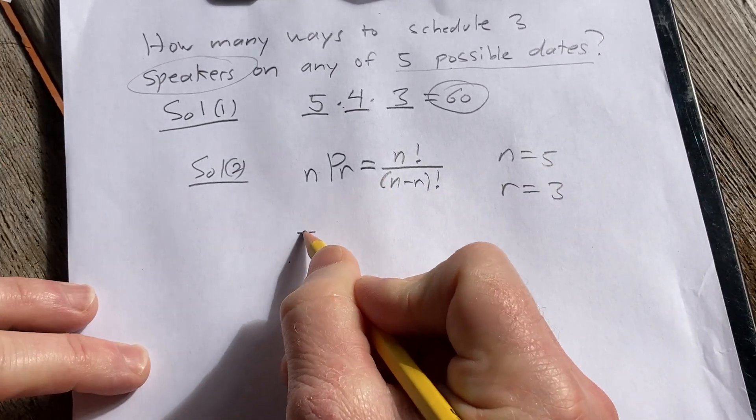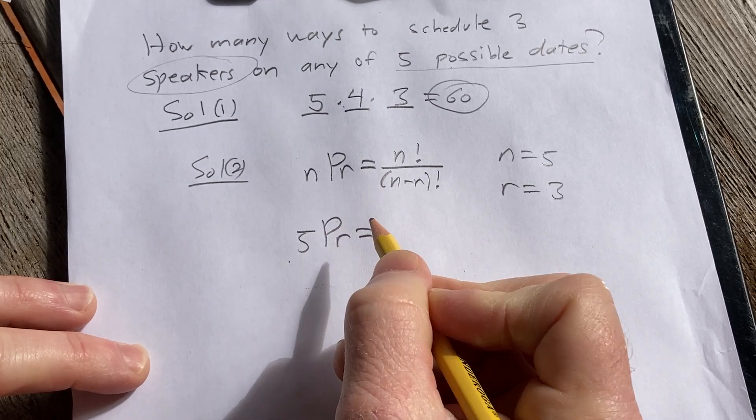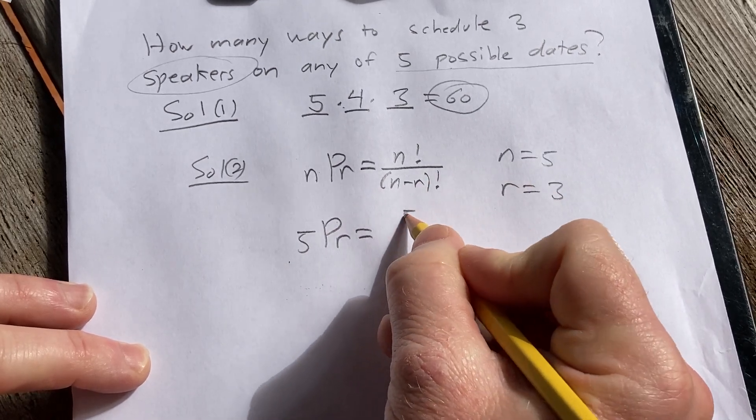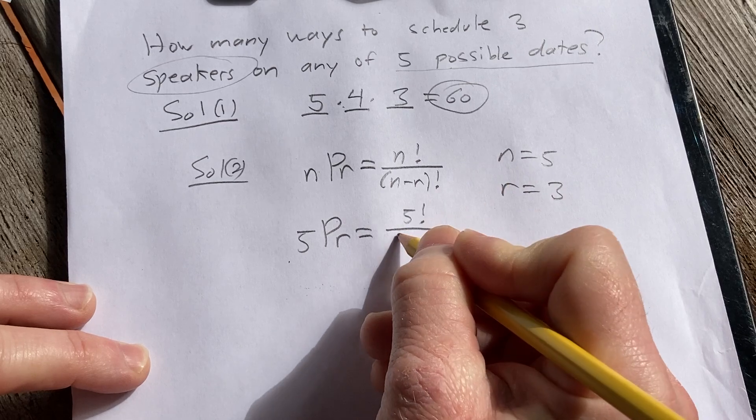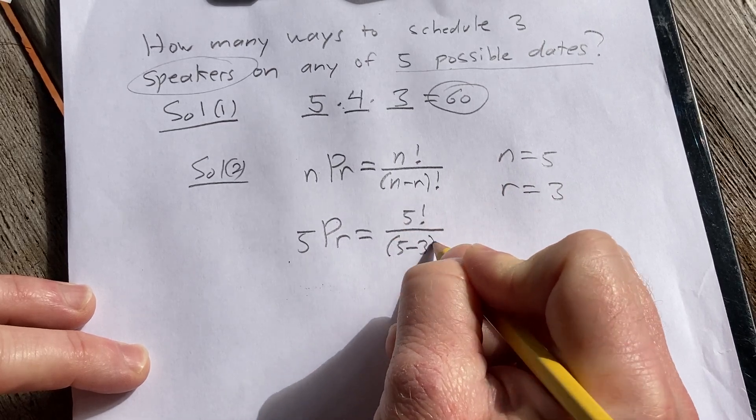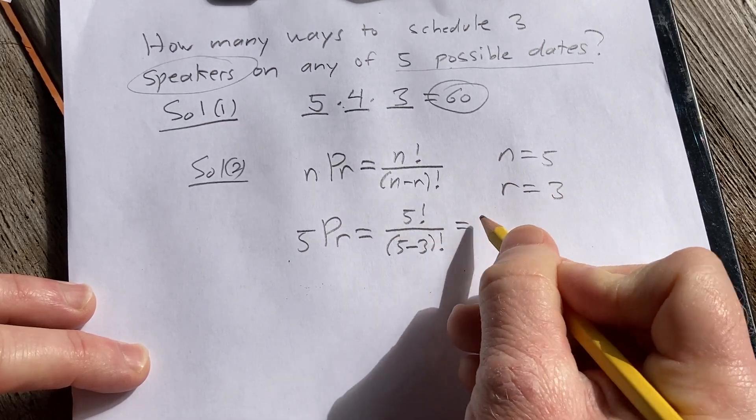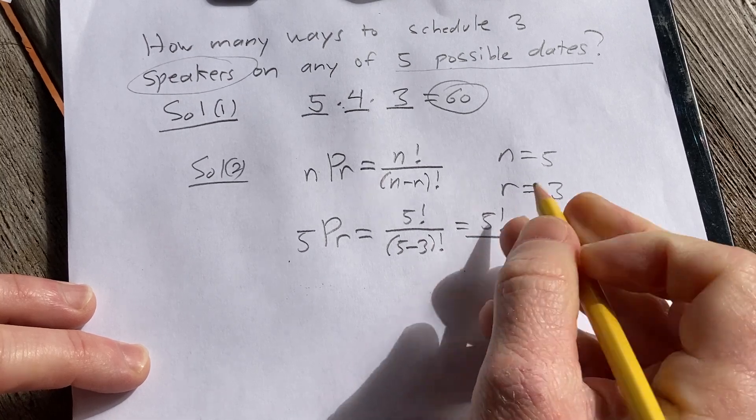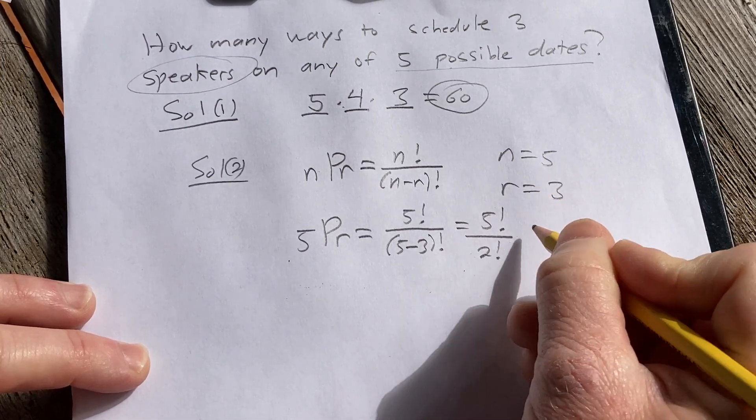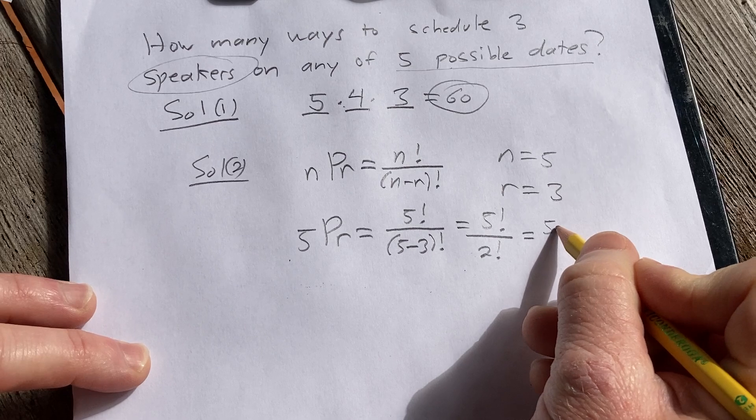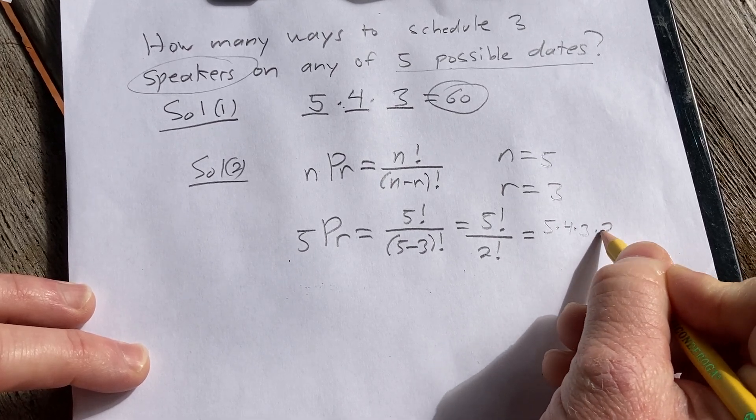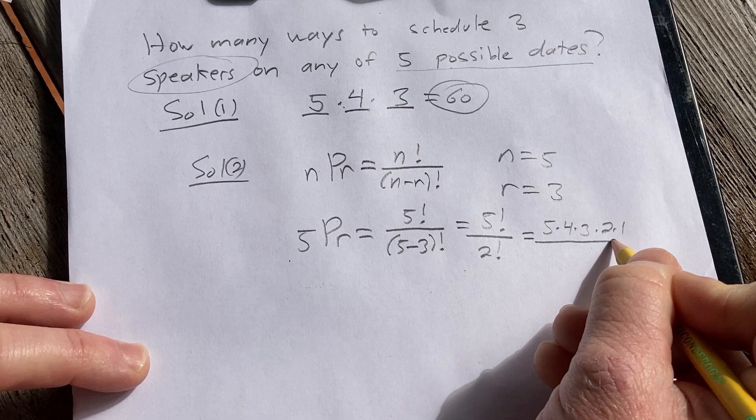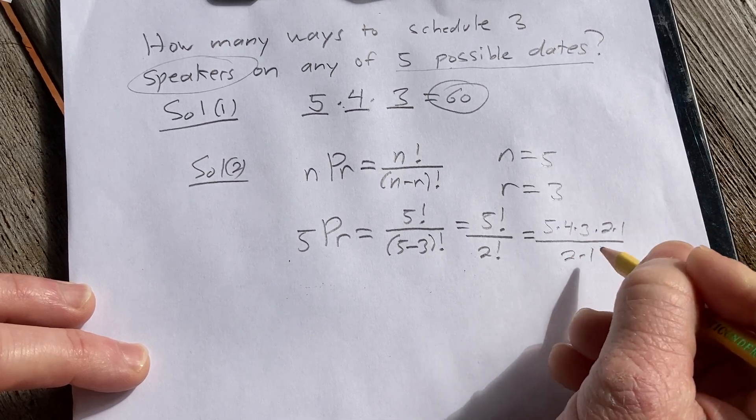So it would be 5P3 equals 5 factorial over 5 minus 3 factorial, which is 5 factorial over 2 factorial. And 5 factorial is 5 times 4 times 3 times 2 times 1, but I write it as 2 times 1, which is just 2 factorial, and 2 factorial is 2 times 1.